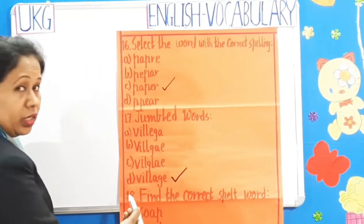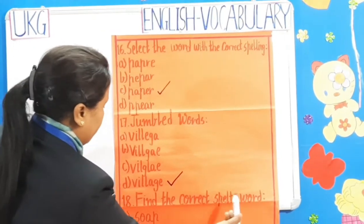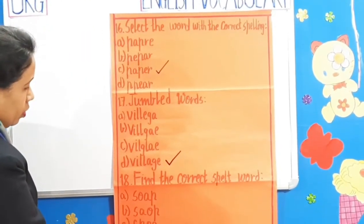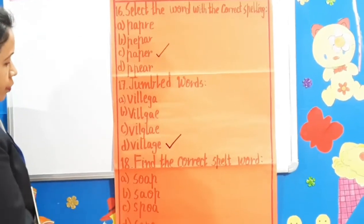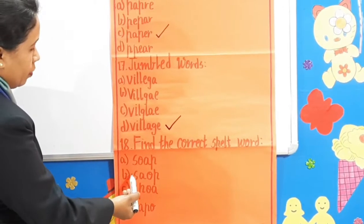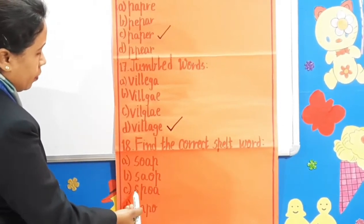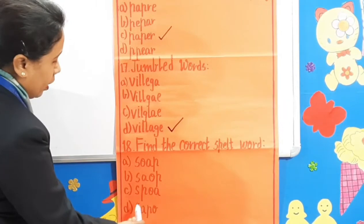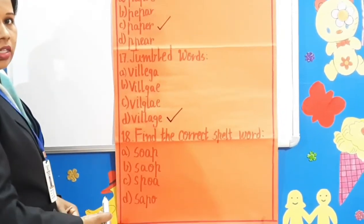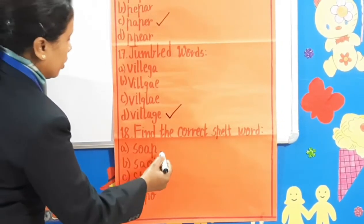Question number 18: Find the correctly spelt word. See the answer, children. Which is the correct spelling? A: S-O-A-P, B: S-A-O-P, C: S-P-O-A, D: S-A-P-O. The correct spelling is S-O-A-P.